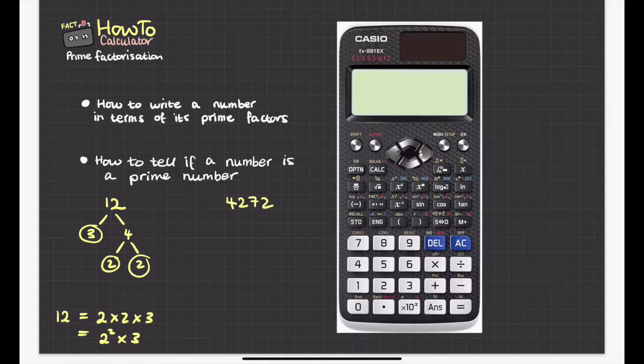And then what you're going to do is you're going to press the shift button. And then you're going to press this button here where it says fact above it. So shift and then fact. And then that writes it as a product of its prime factors. So it says here that 4,272 can be written as 2 to the power of 4 multiplied by 3 multiplied by 89.